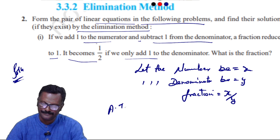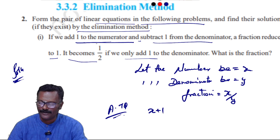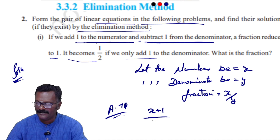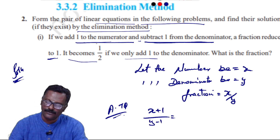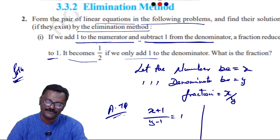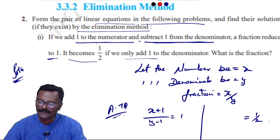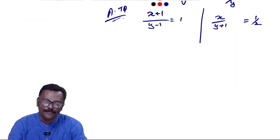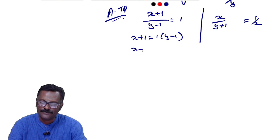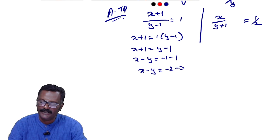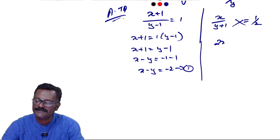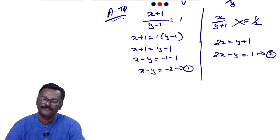According to the question, if we add one to the numerator and subtract one from the denominator, the fraction equals 1: (x+1)/(y-1) = 1, giving x + 1 = y - 1, so x - y = -2. That is equation one. The second condition: if we add one to the denominator, the fraction becomes 1/2: x/(y+1) = 1/2, giving 2x = y + 1, so 2x - y = 1. That is equation two.